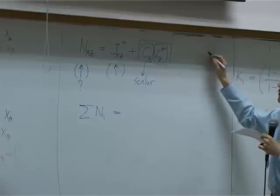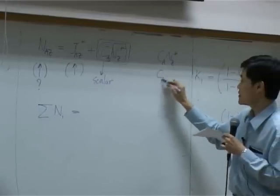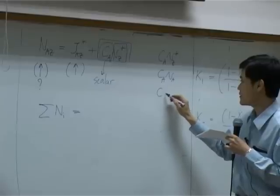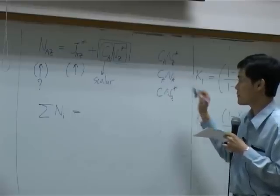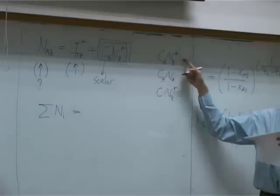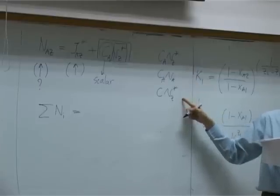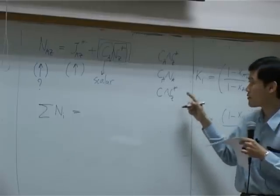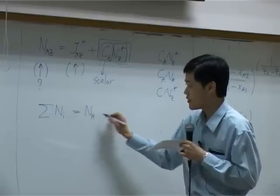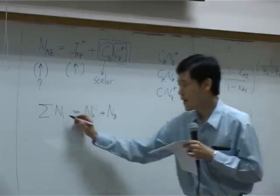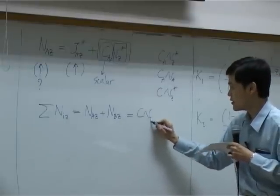There are three different terms that can be confusing: c_a·v_z*, c_a·v_a, and the combined terms. The first is convective flux, the second is combined flux of species a, and the third is combined flux of all species. Combined flux of all species is sigma n_i, which for a binary system gives n_a plus n_b. In the z-direction, n_az plus n_bz equals c·v_z*.